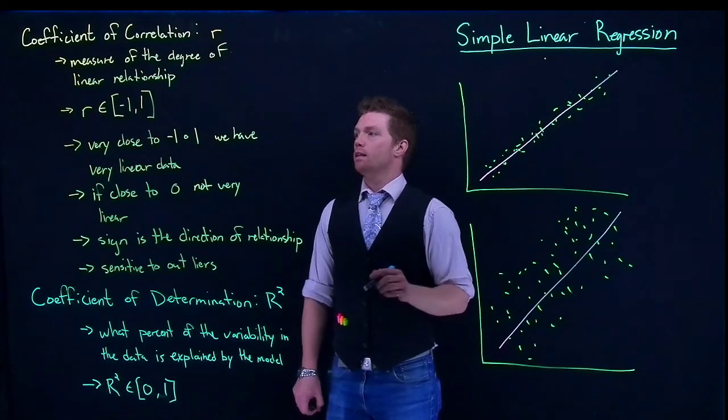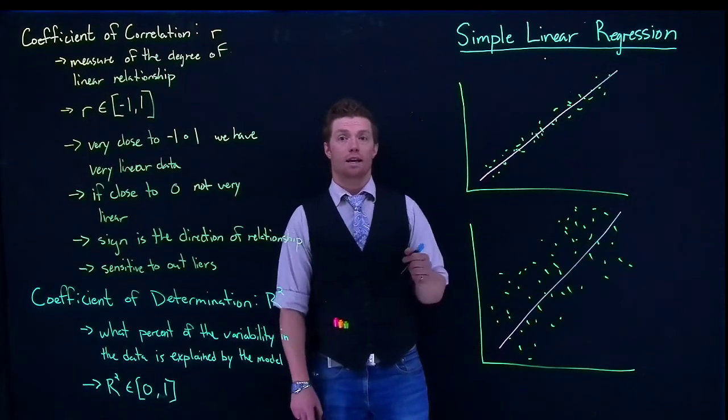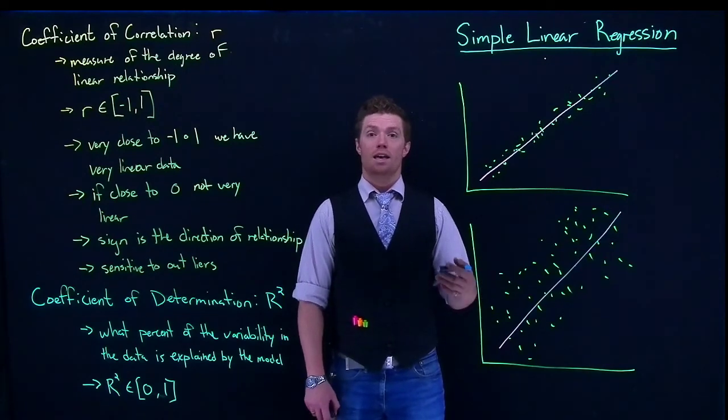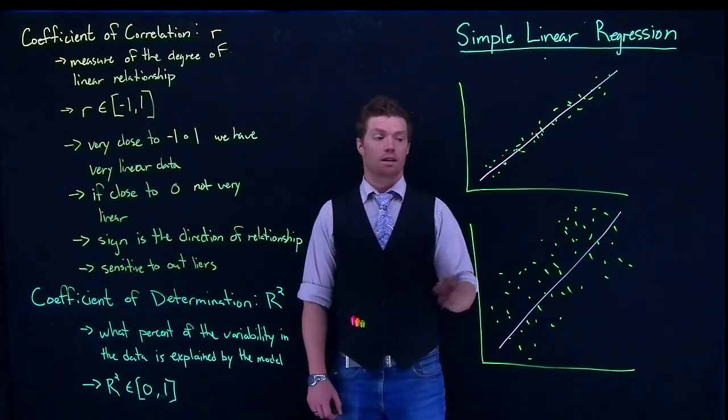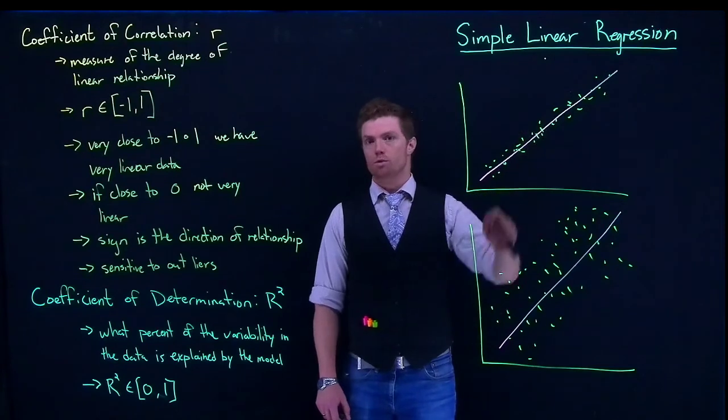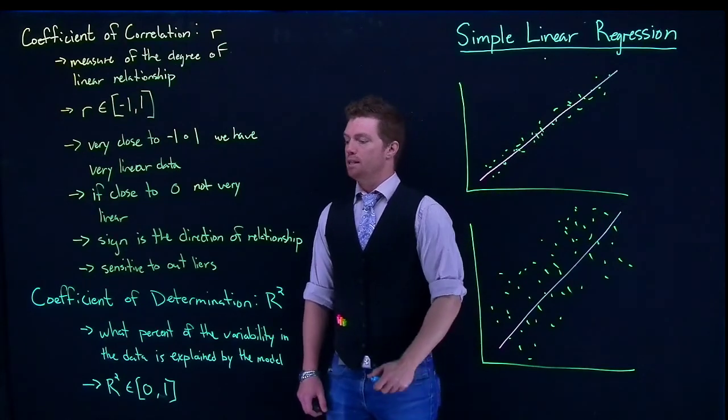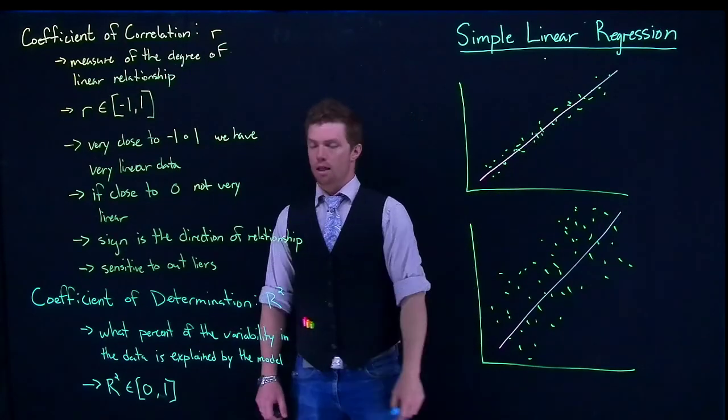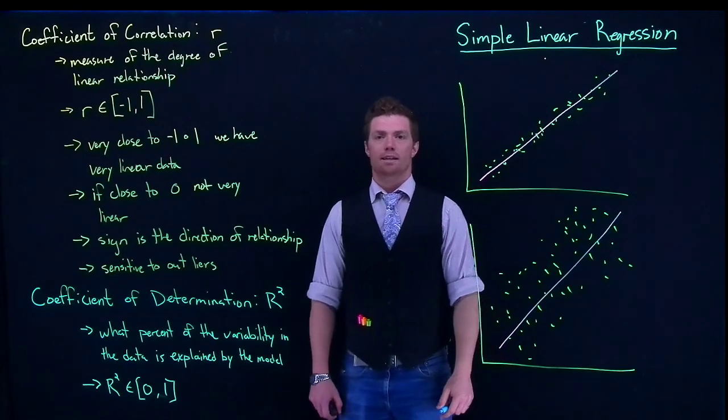And so these are two values that can help us understand is our model any good. Not only is it significant, like is there actually some sort of slope going on. But does it explain away a lot of the variability in our data?